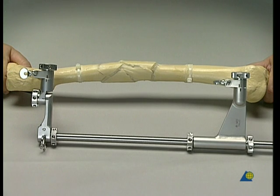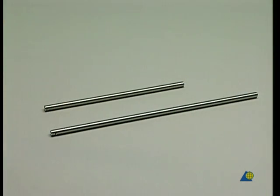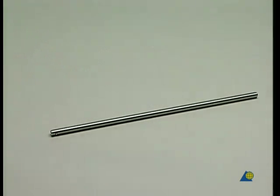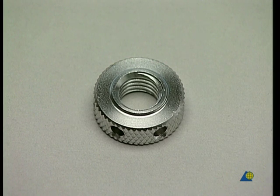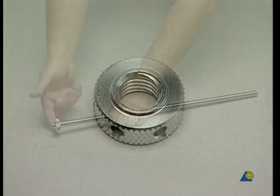The distractor is first assembled. There are two different lengths of threaded rods. For this exercise on the femur, the longer is more appropriate. A knurled nut is screwed onto the end of the threaded rod in which there is a transverse hole.